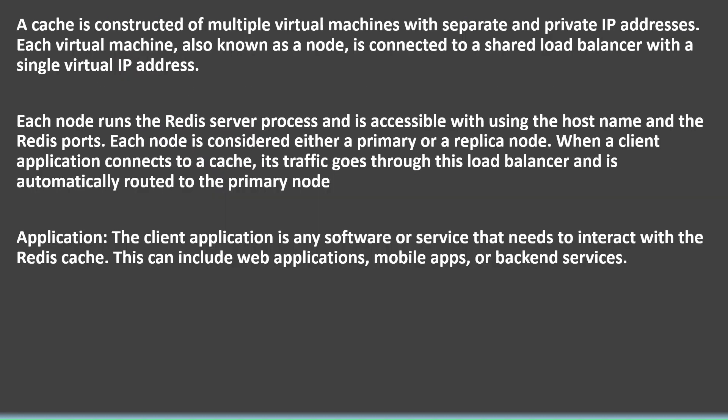A cache is constructed of multiple virtual machines with separate and private IP addresses. Each virtual machine, also known as a node, is connected to a shared load balancer with a single virtual IP address. Each node runs the Redis server process and is accessible using the hostname and the Redis ports.